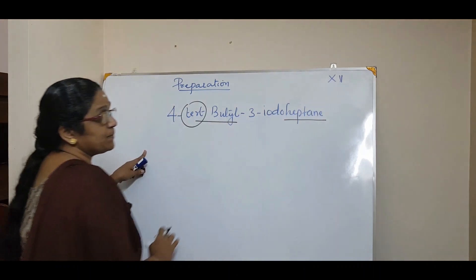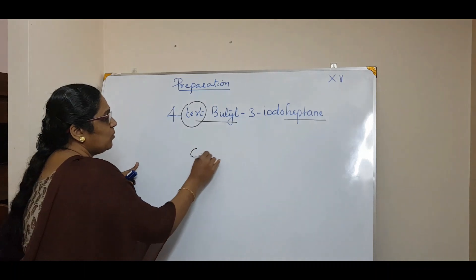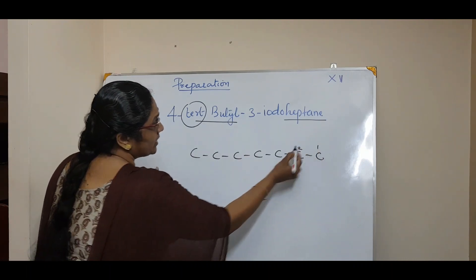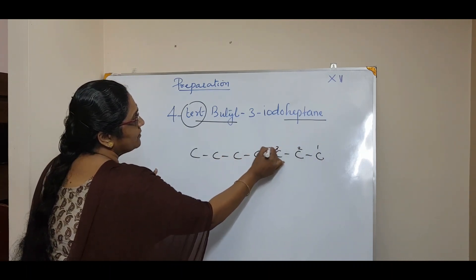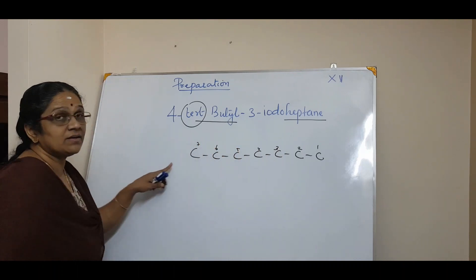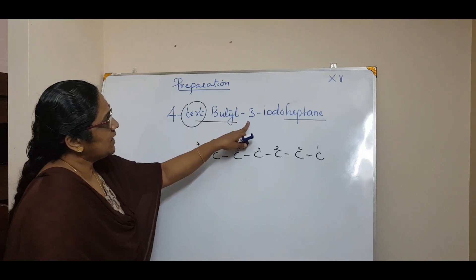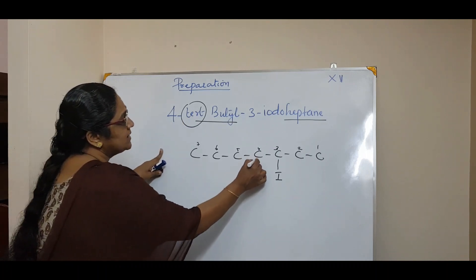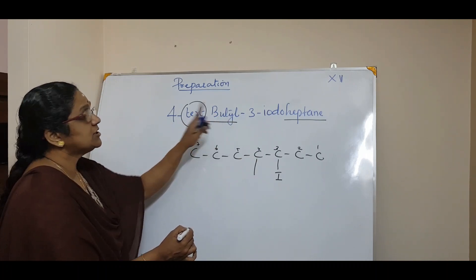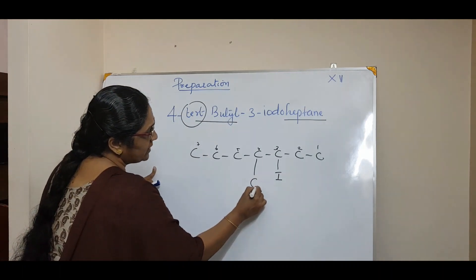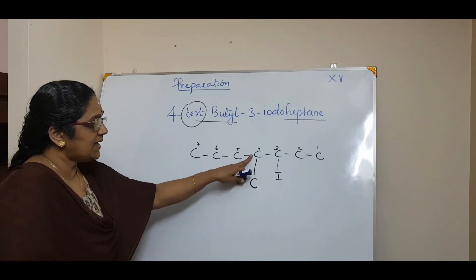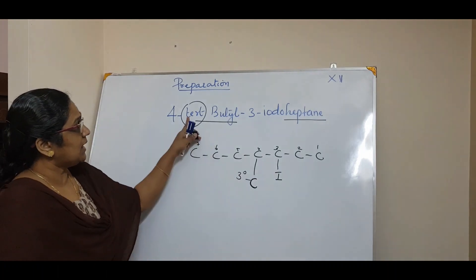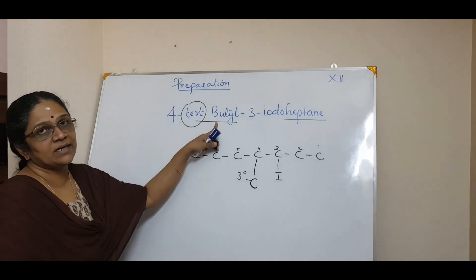The parent compound is heptane, so you number 1, 2, 3, 4, 5, 6, 7. Now if you number from the other side: 4, 5, 6, 7. It is 3-iodo at position 3, and at position 4 it is the tert-butyl group.